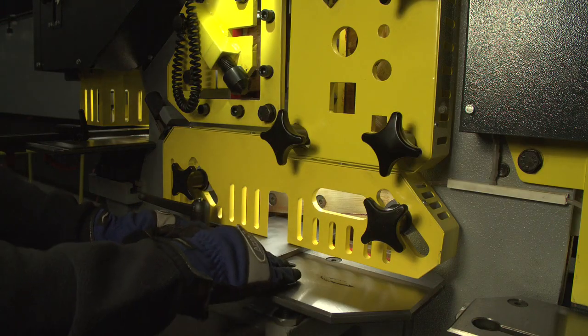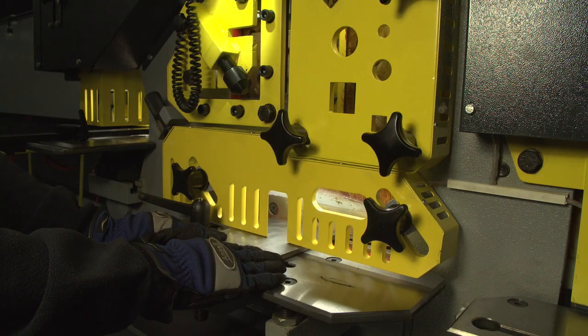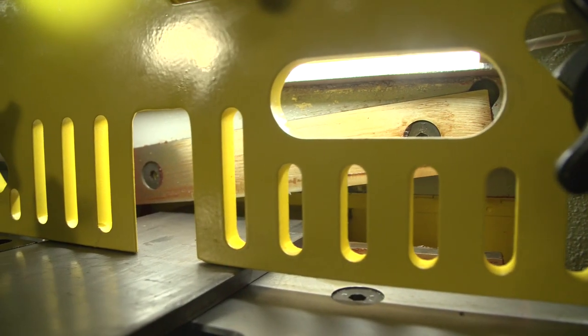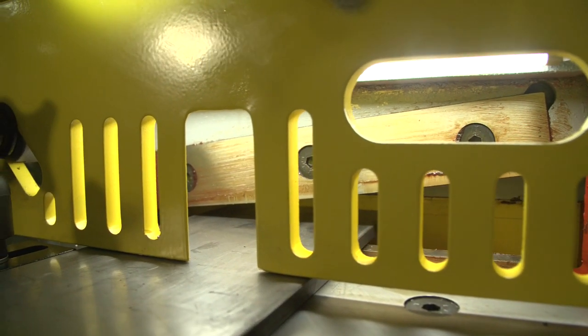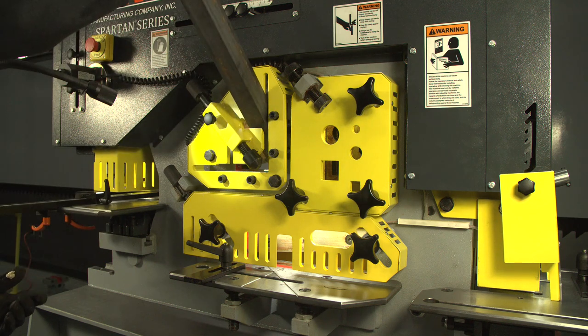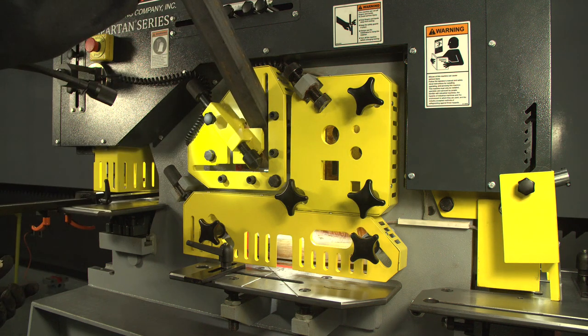Marvel's flat bar shear cuts flatter than any iron worker in the industry, thanks to its extremely low rake angle and straight cut technology. Marvel's shear station guards have multiple visibility slots for enhanced workpiece viewing.